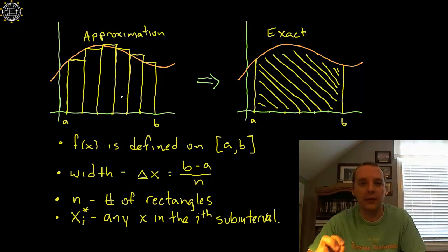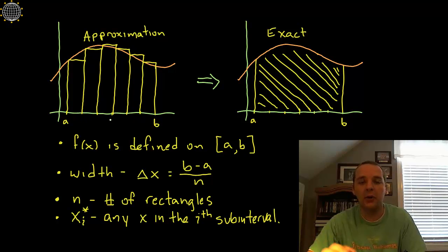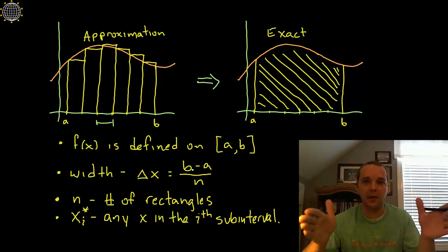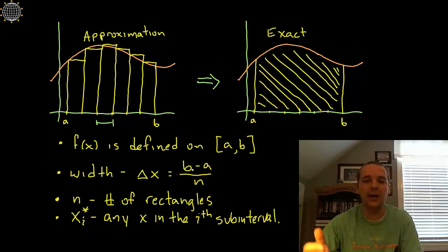Before we begin, a few technical details. These functions are going to be defined on a closed interval — like 2 to 5, or 1 to 7. The width of each sub-interval is going to be dictated by how many rectangles you have and what the length of the interval is. The width is going to be B minus A divided by N, where B minus A figures out how long your interval is, and dividing by the number of rectangles determines the width of each sub-interval.